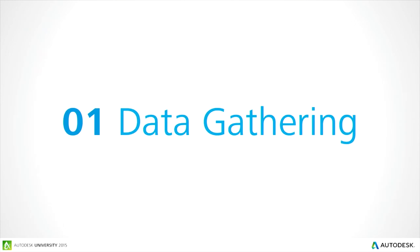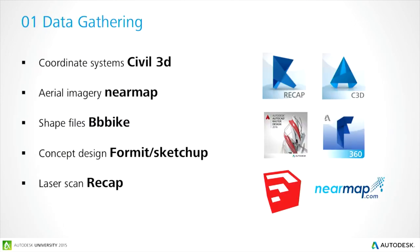Section one is data gathering, covering five products: Civil 3D for coordinate systems, Nearmap for aerial imagery, BBBike for shape files, FormIt and SketchUp for conceptual design and context buildings, and then ReCap laser data to convert point clouds into actual surfaces and LandXML data.